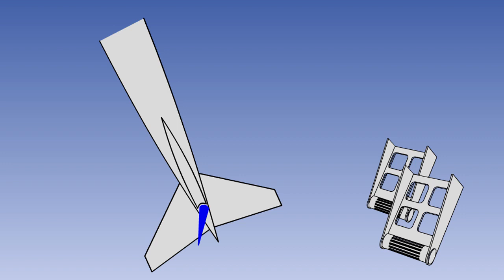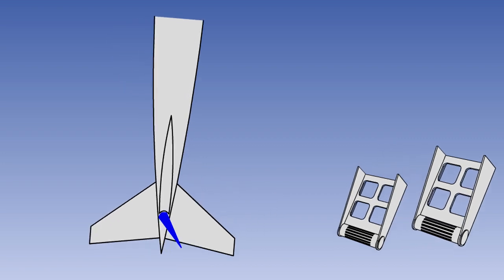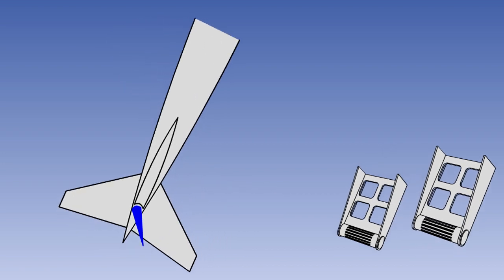The rudder is required to maintain directional control with asymmetric power, to correct for crosswinds on take-off and landing, to correct for adverse yaw, to recover from a spin, and on a single-engine aircraft, to correct for changes in propeller torque.